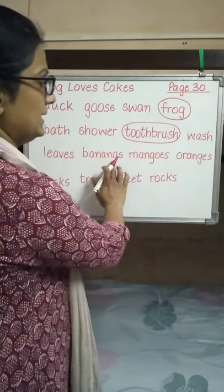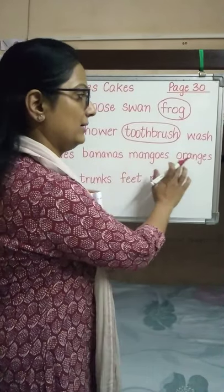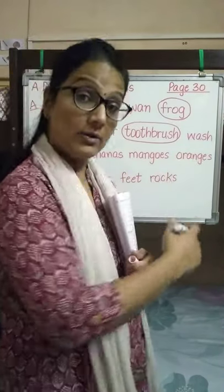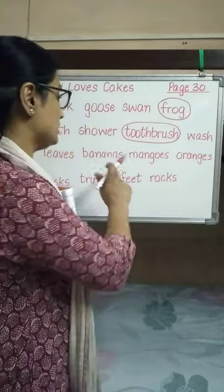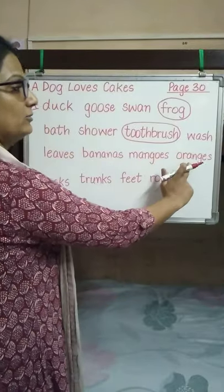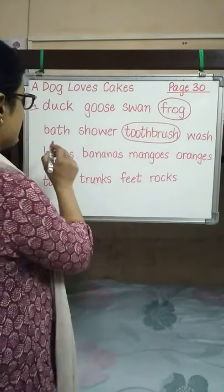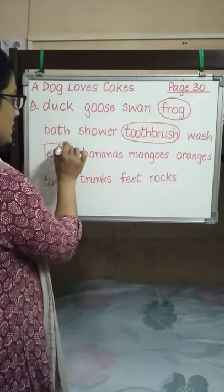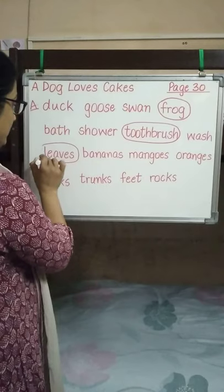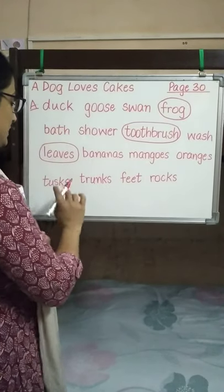Next group: leaves, bananas, mangoes, oranges. Now bananas, mangoes and oranges are fruits. So what is the odd one out? Leaves.